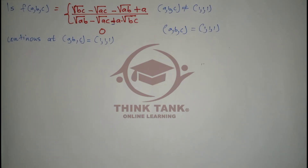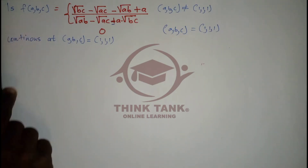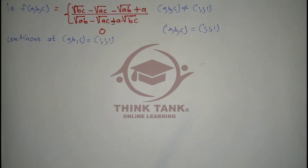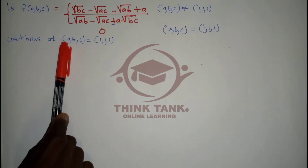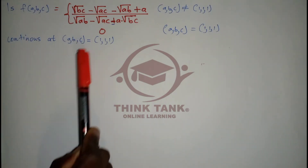Hi there, welcome back. In this video we're going to look at limits and continuity. If you're looking for other videos like this one, go to the description — you're going to see a playlist named 'Limits and Continuity'. In this problem, we're given the function f(a, b, c), where a and b are the variables. We want to prove if the function is continuous at the point where a is 1, b is 1, and c equals 1.